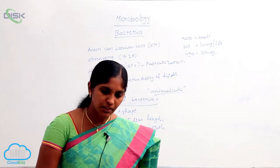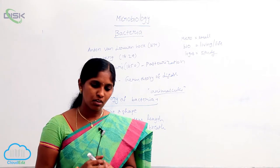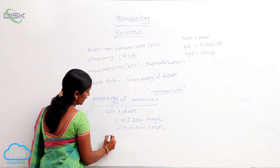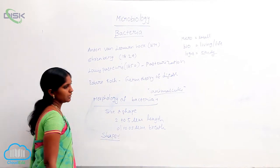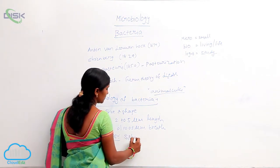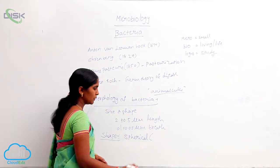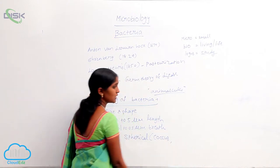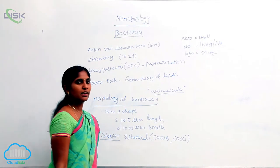The size and shape is determined due to the presence of the rigid cell wall. Coming to the shape, bacteria are available in different shapes. Generally, they are in spherical shape. Spherical shape is simply termed as coccus. Coccus is singular; cocci is plural.